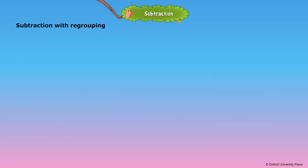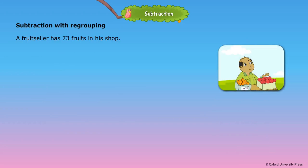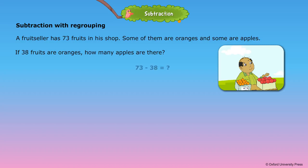Subtraction with regrouping. A fruit seller has 73 fruits in his shop. Some of them are oranges and some are apples. If 38 fruits are oranges, how many apples are there?